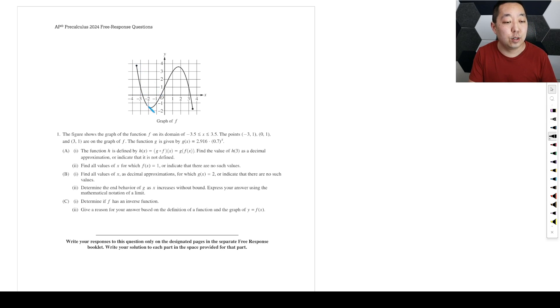Figure shows the graph of this function on this domain from negative 3.5 to 3.5. The points negative 3, 1, 0, 1, 3, 1 on the graph of F. The function G is given by this. So they're giving you some other function. They're giving you a graph of F, and they're describing another function to you. The function H is defined by that. Find the value of H.